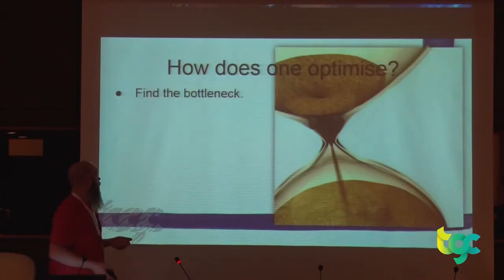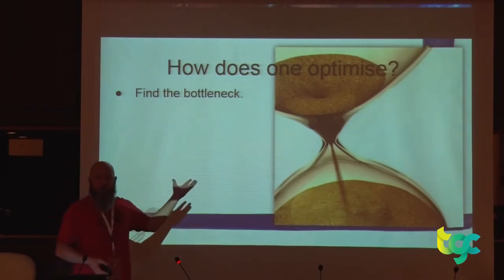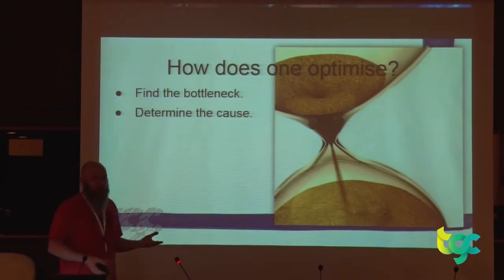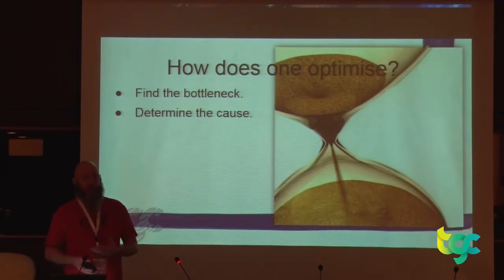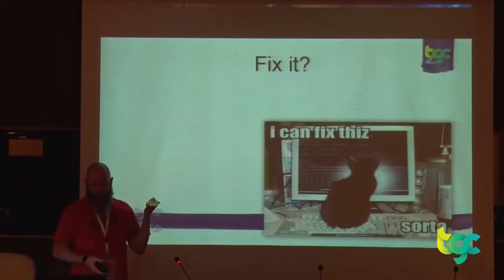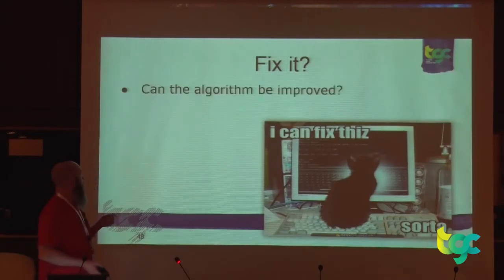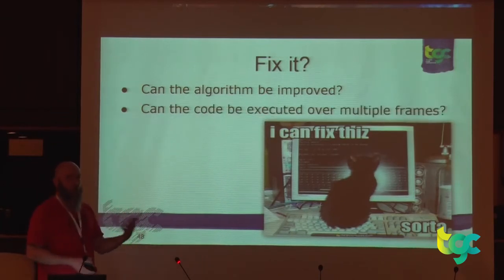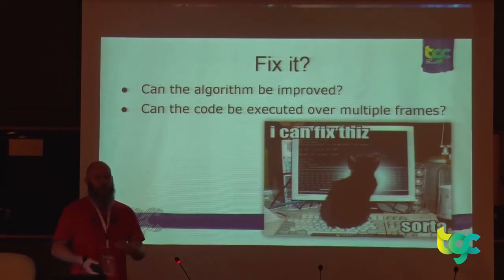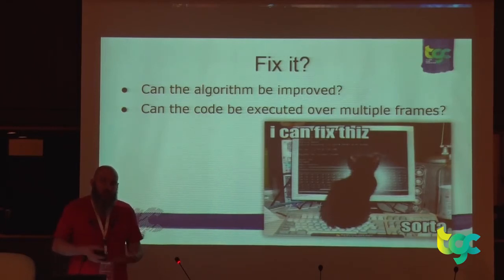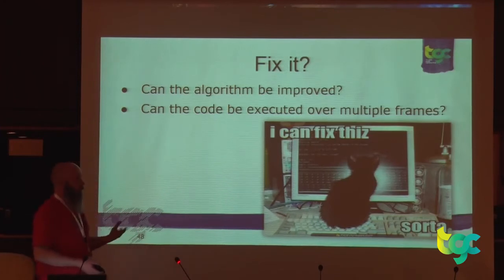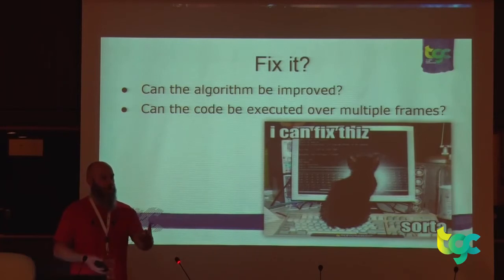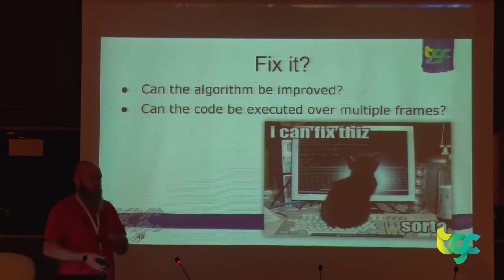How does one optimise? First, you find the bottleneck using profilers, figure out where the problem is, then determine the cause — that requires some level of expertise. Then you fix it. You can look at the algorithm being used. Can the code be executed over multiple frames — if it's AI, can we do 10 creatures now and 10 next frame? Let's alternate and interpolate positions and get away with 'good enough.' Games are all just smoke and mirrors — we lie to players all the time, providing an experience that looks like the real thing but is not. So we can cheat. You can do less stuff — instead of 100 entities, 80 might be enough.